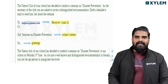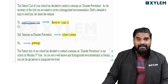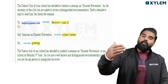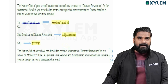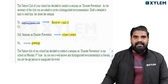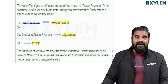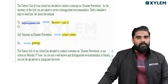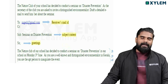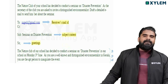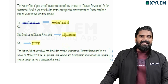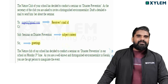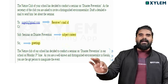We need two addresses: the from address — the sender's email ID — and the to address — the receiver's email ID. We also have the CC column and the BCC column. CC stands for carbon copy. The subject here is: 'Seminar on Disaster Prevention.'